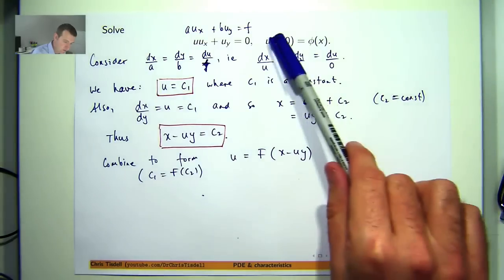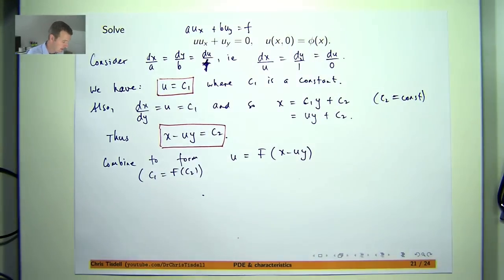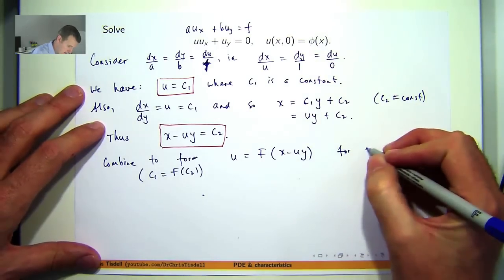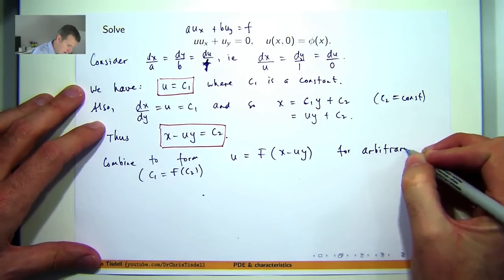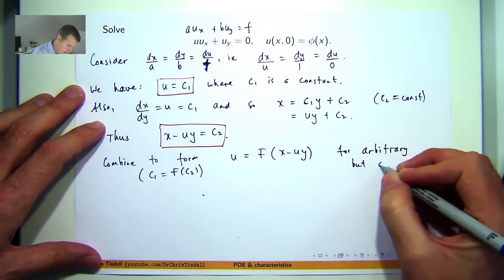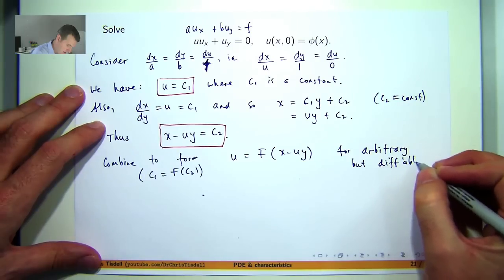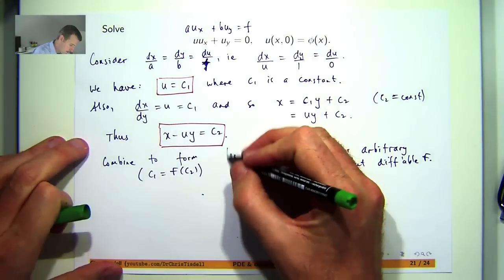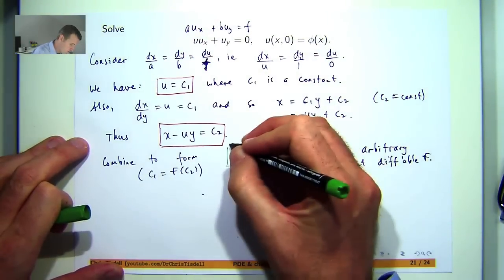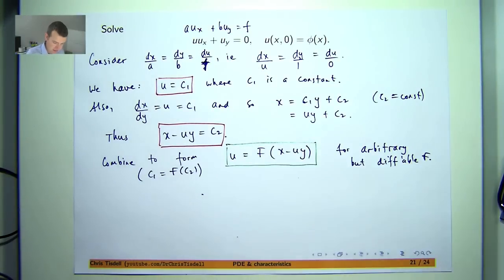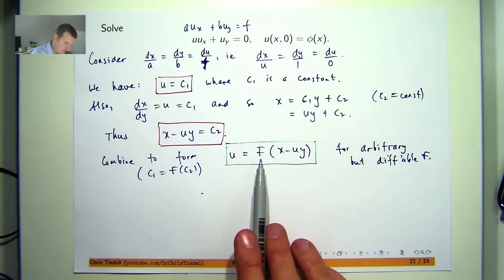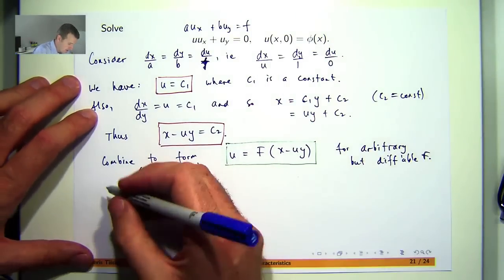I guess we're almost finished the problem now but we haven't actually introduced the initial condition yet. So let's now, you can think of this as the general implicit solution to Burger's equation. So now let's refine this. Try to find big F by using the initial condition.